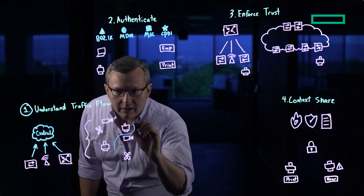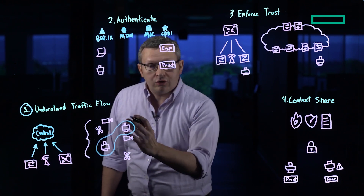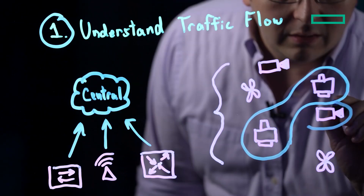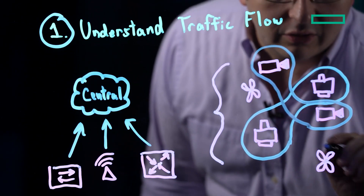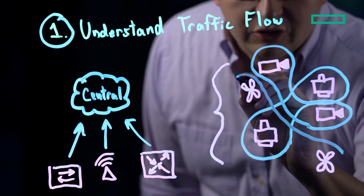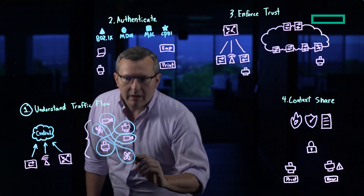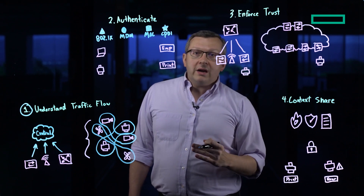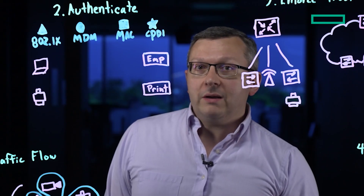So here, instead of having a mess of different devices, I can start to sort my printers into a group very easily, my cameras into a group very easily, and my HVAC control systems into a group very easily, giving me the tools that I need to quickly identify the endpoint types as well as the traffic types that I have going across my network.